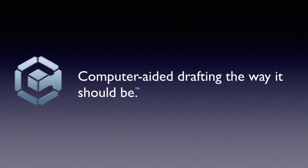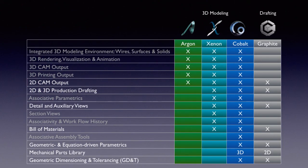Now let's turn our attention to Graphite, still the most popular product we sell. We say Graphite is computer-aided drafting the way it should be. Graphite is our wireframe CAD software. It offers effortless precision 2D and 3D drafting. Graphite has advanced equation-driven parametrics, multiple dynamic views, a bill of materials, and 2D output for CAM and 3D printing.